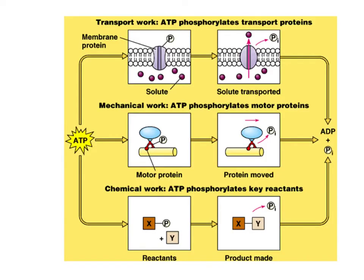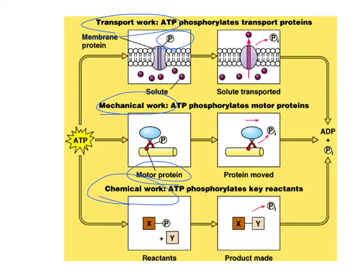ATP powers a variety of reactions. It can do transport work — ATP phosphorylates a membrane protein, which allows it to function. ATP can power mechanical work with motor proteins; when they're phosphorylated, it allows them to do work. ATP also powers chemical work — it can phosphorylate reactants and power chemical reactions.